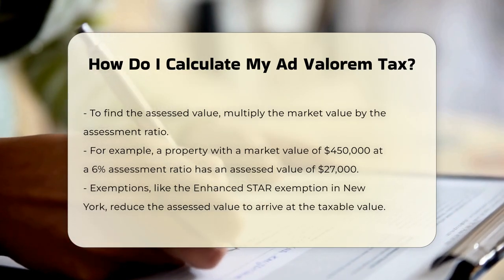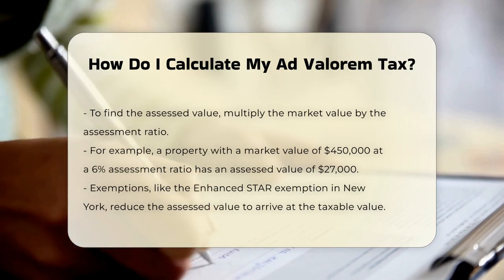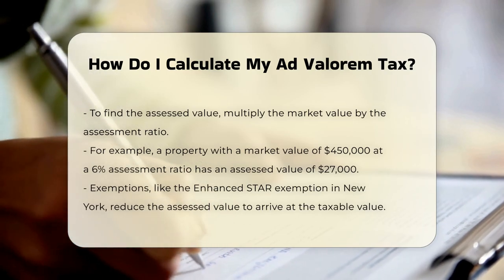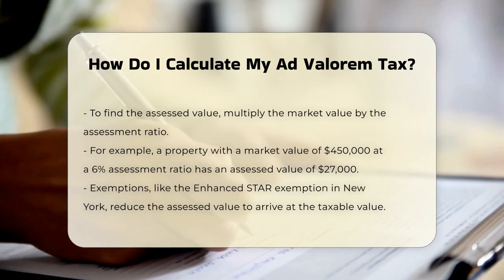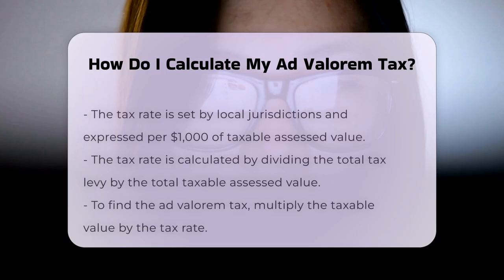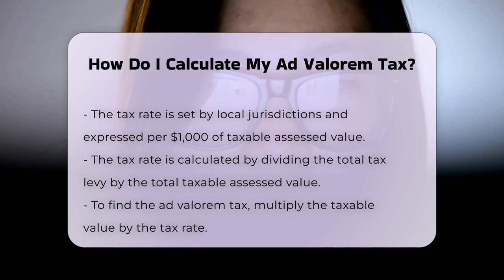Step four: Determining the tax rate. The tax rate is set by the local taxing jurisdiction and is usually expressed as a rate per $1,000 of taxable assessed value. This rate is calculated by dividing the total tax levy by the total taxable assessed value of all properties in the jurisdiction and then multiplying by $1,000.